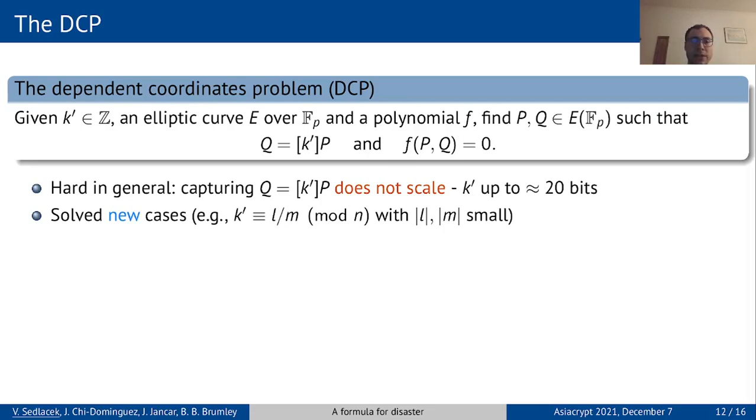But on the bright side, we also noticed that when F does not depend on one of the points, then the DCP becomes easy. For RPA, this is nothing surprising really, but RPA is not that powerful because it requires a curve with at least one point with zero x or y coordinate. And it is quite easy to classify these and prevent the attack.